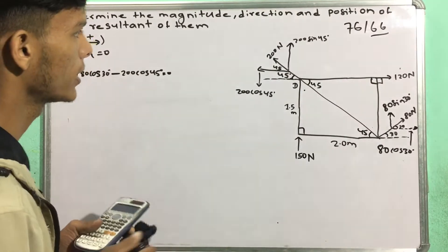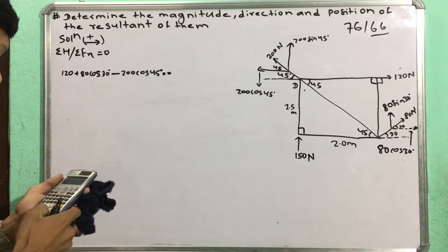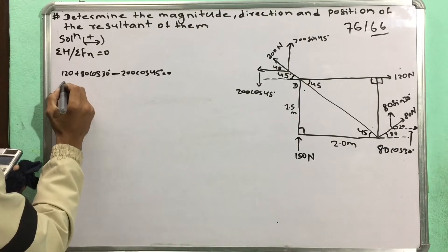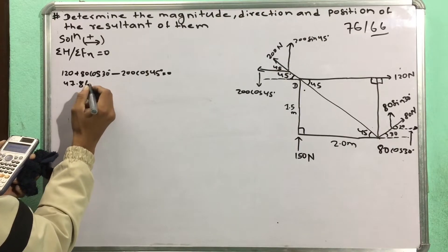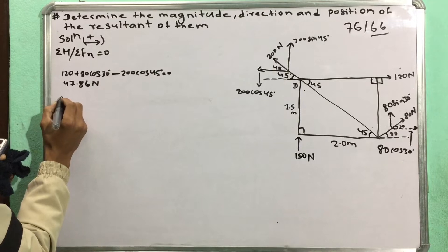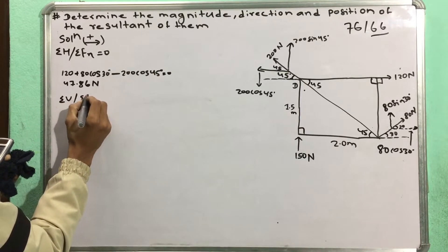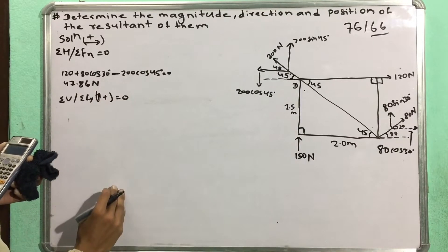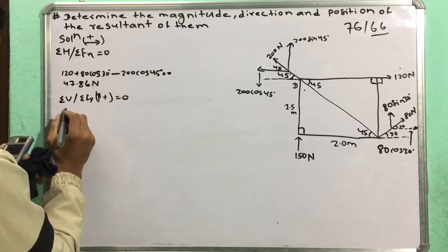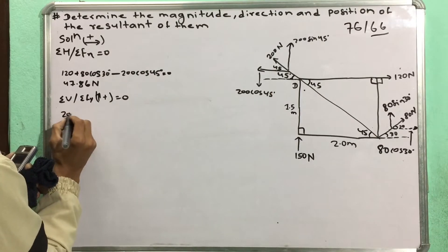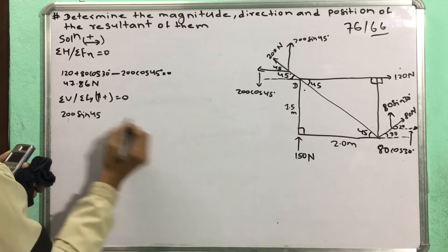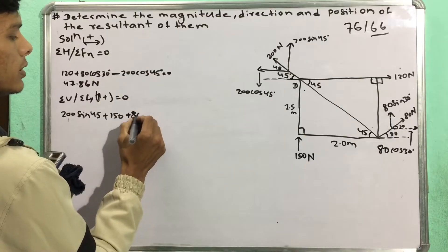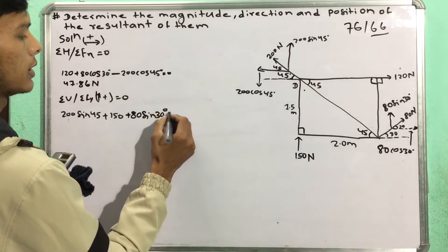We calculate the original force. Now, the vertical force is the summation of forces in y. Plus 80 sin 30 degrees, 30 degrees equal to zero.